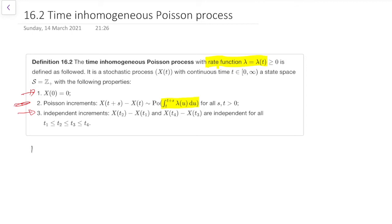It's worth saying that if the rate function lambda of t is actually constant, then what do we get back for this integral? It's the integral between t and t plus s of just lambda, a constant du, which is just lambda times the length.